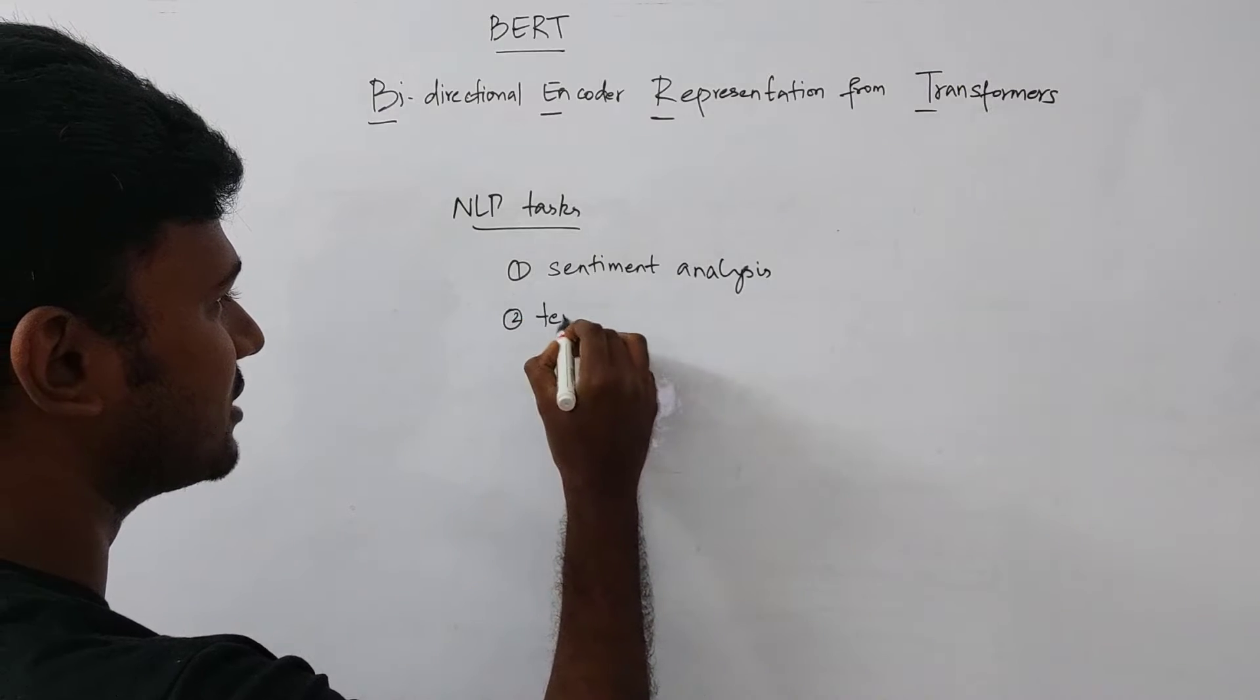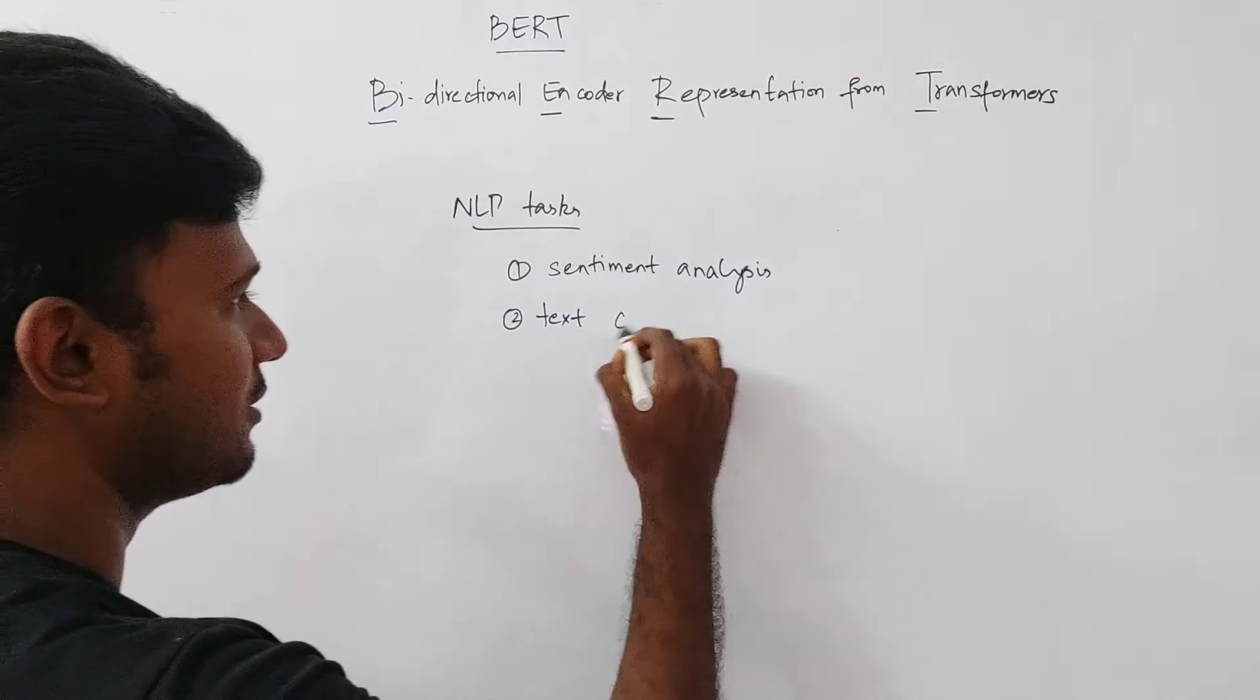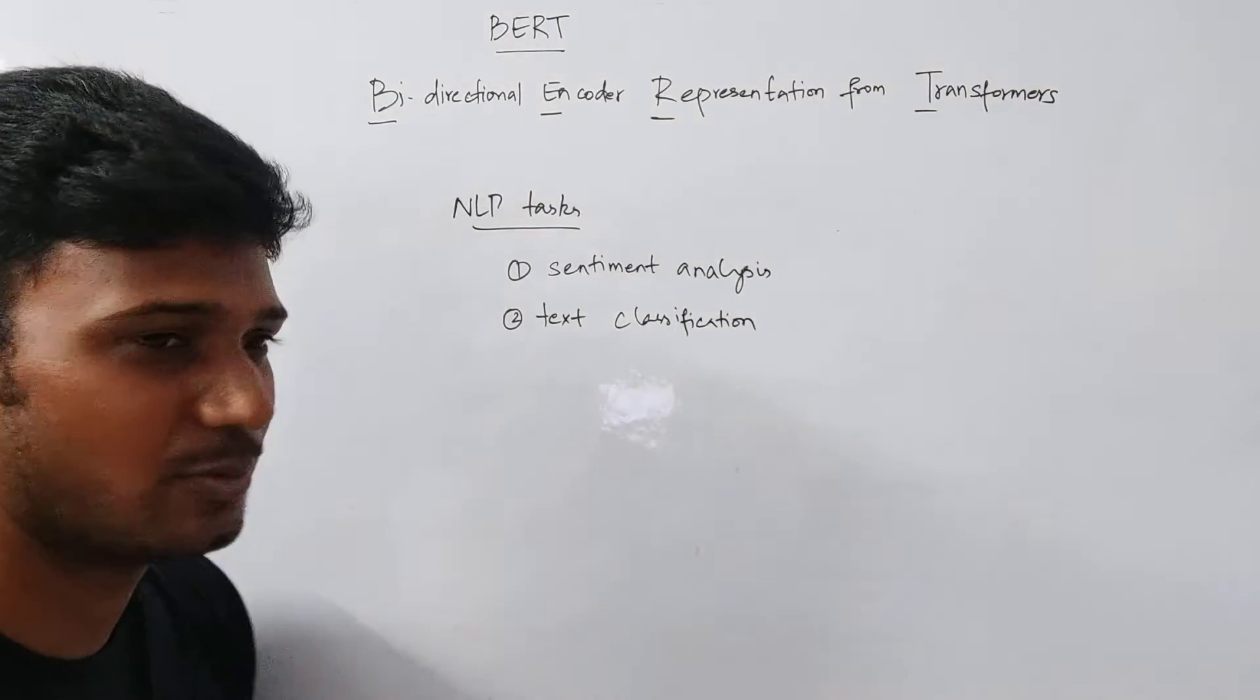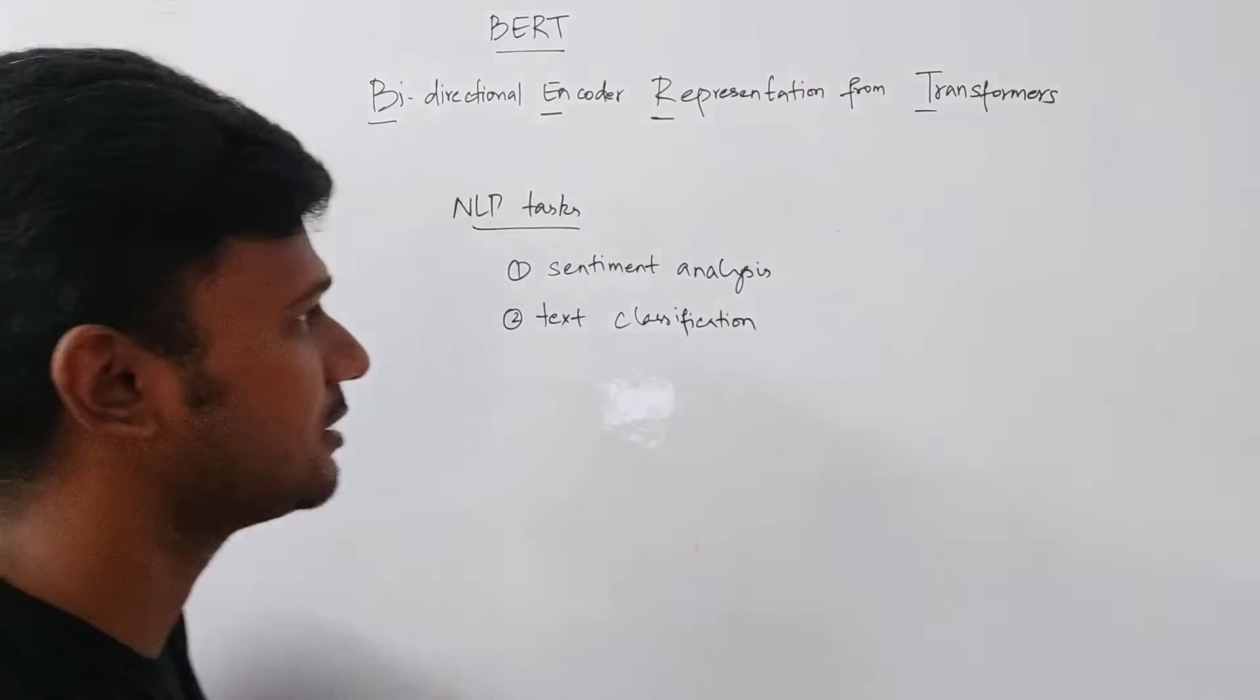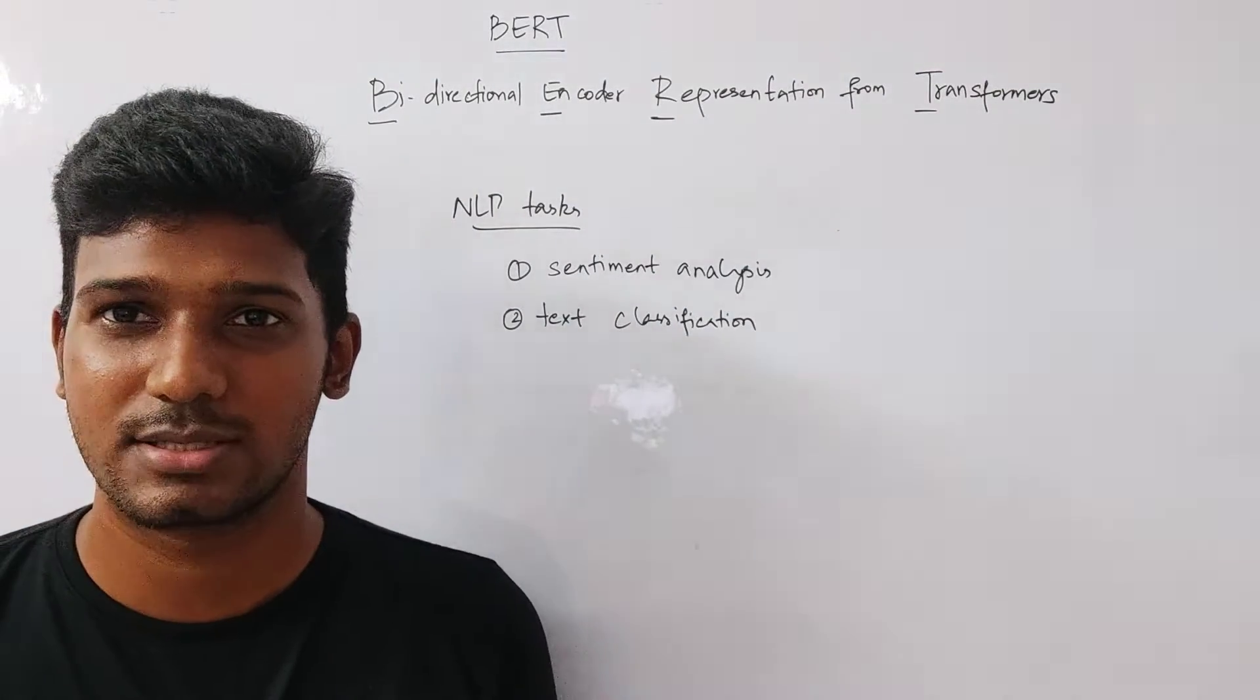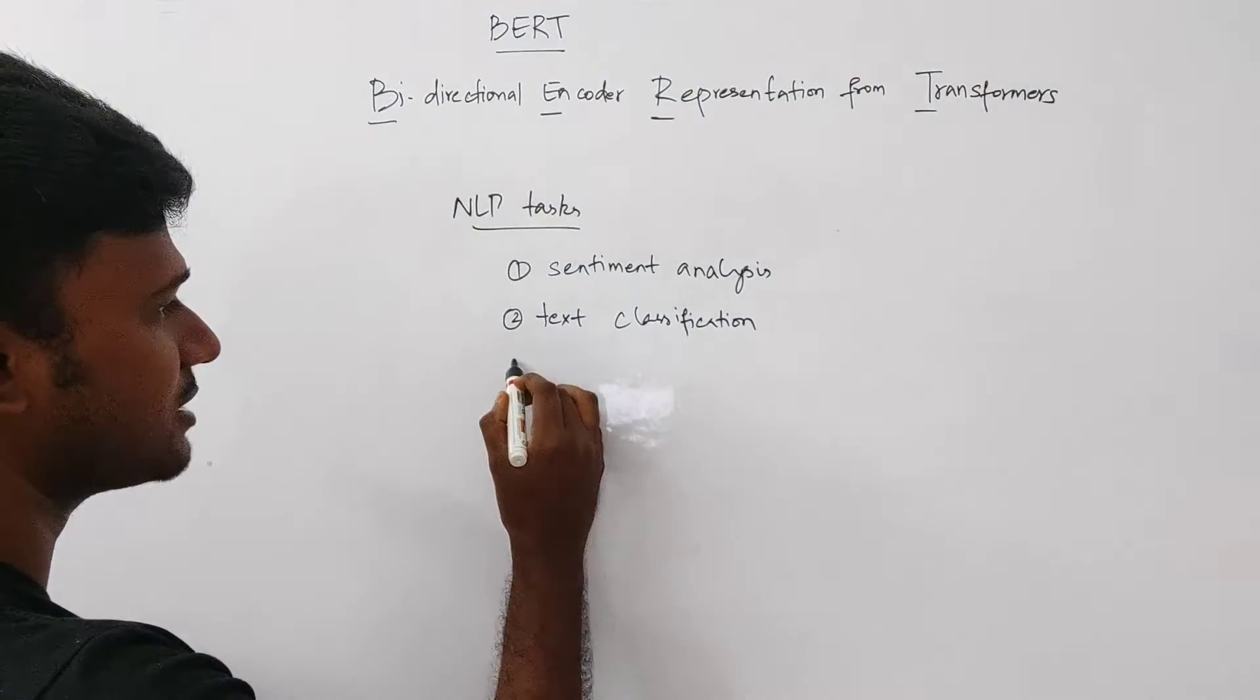And second, we have text classification. For example, you have a whole bunch of news and you need to classify whether this belongs to political news, whether this belongs to sports news, or whether this belongs to cinema news, something like that. You can basically classify those pieces of text sentences based on what they convey. So that is text classification.